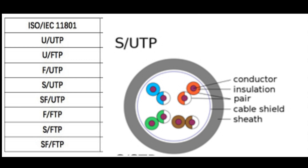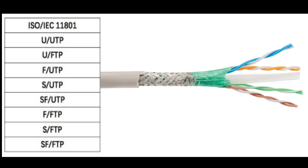SFUTP is shielded and foiled with unshielded twisted pair. It is shielded and unshielded UTP. The name is SFUTP — shielded and foiled with unshielded twisted pair. It is one of the two shielded and foiled with unshielded options.